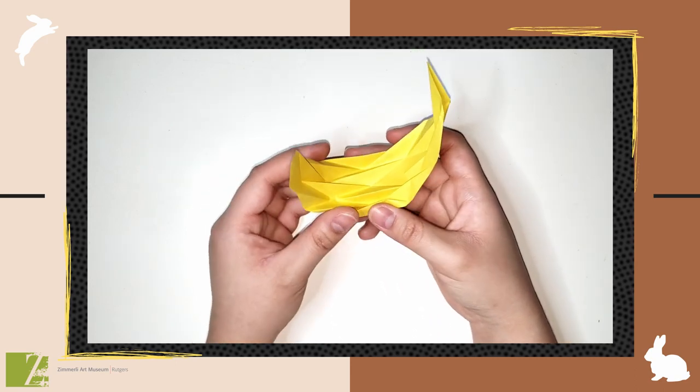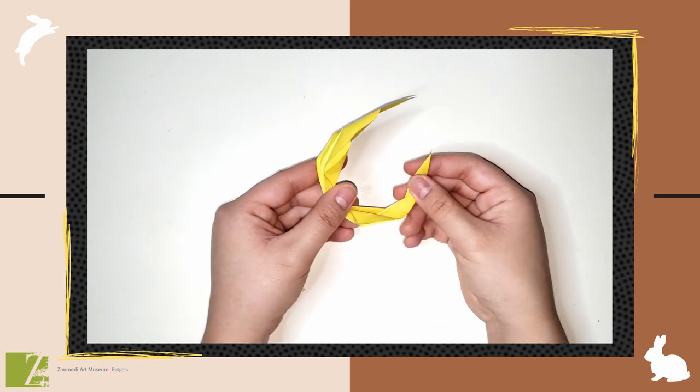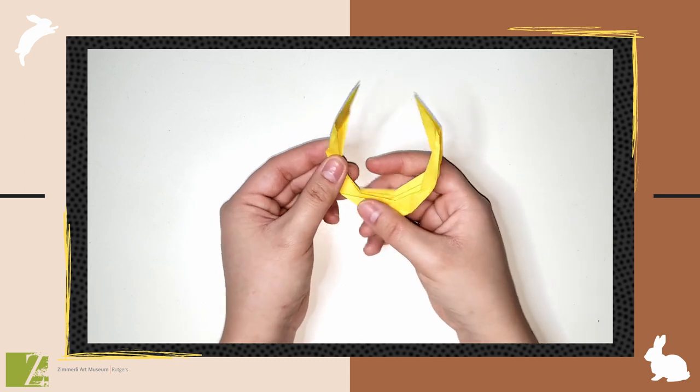Now, once you've pinched all the mini diamonds, it should look like this. Reinforce the paper together and there you have it, the waning moon.